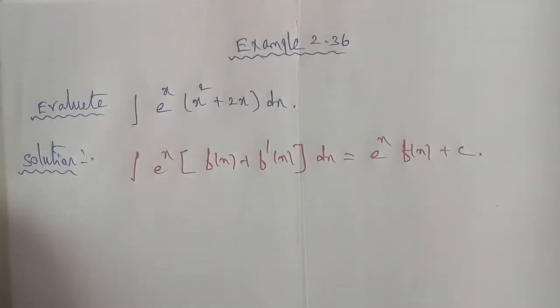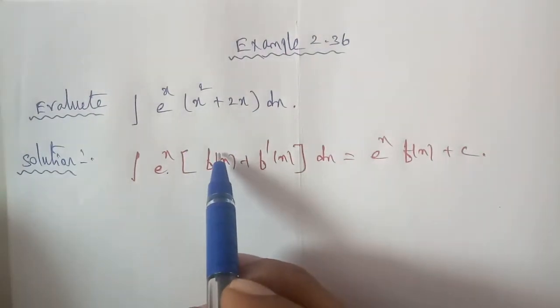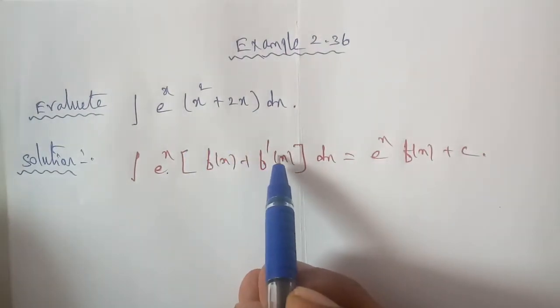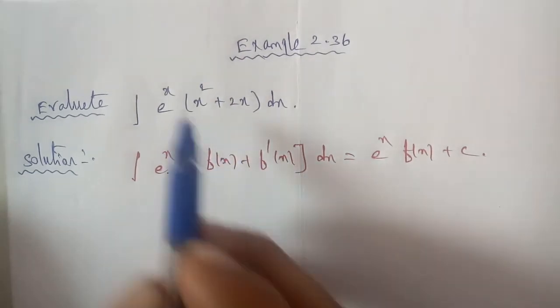So to apply this formula, the given question must have e power of x, and when we differentiate f of x term, we should get f dash of x beside it. So let's differentiate the term to see if the given question matches the formula.